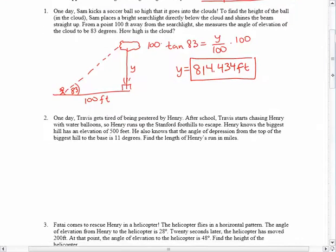So if we picture, here's Henry, and here's the mountain, the foothill. We know that it has an elevation of 500 feet. So that would be this.